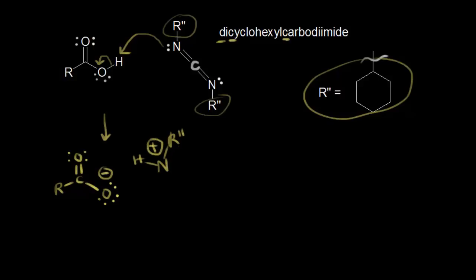The electrons in magenta take this proton, forming this bond, and the electrons move off onto the oxygen to form our carboxylate anion. We have a nitrogen double bonded to a carbon, which is double bonded to another nitrogen with a lone pair of electrons, and our R'' group. Because we just protonated this nitrogen, it really wants electrons and can withdraw electron density away from this carbon, making this carbon electrophilic.